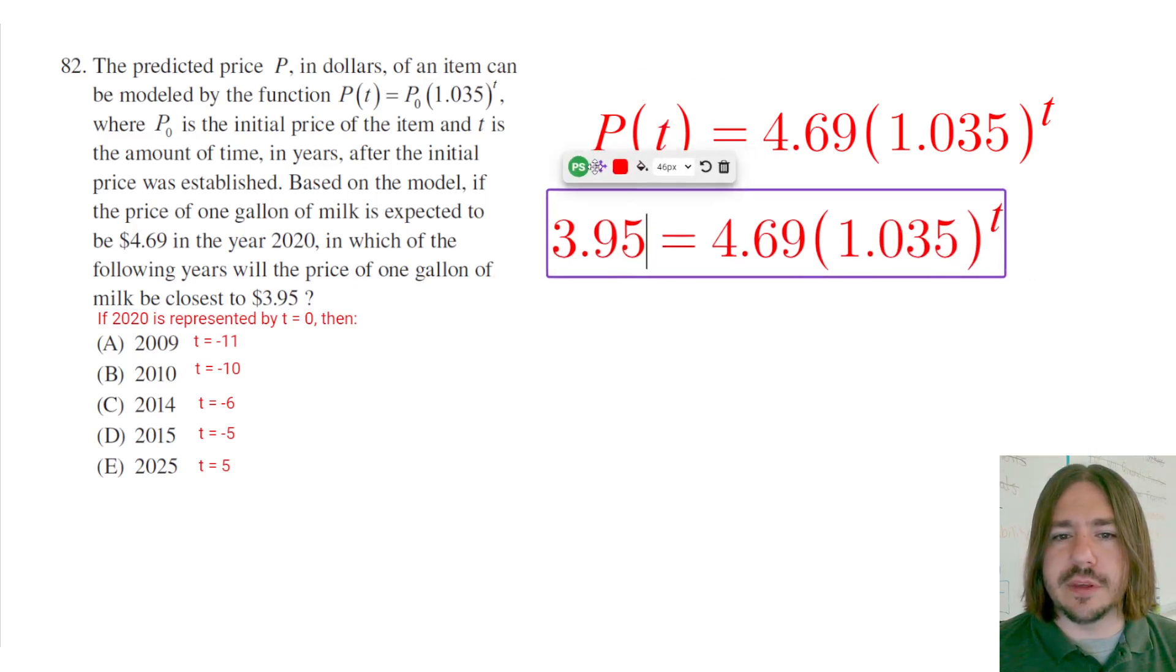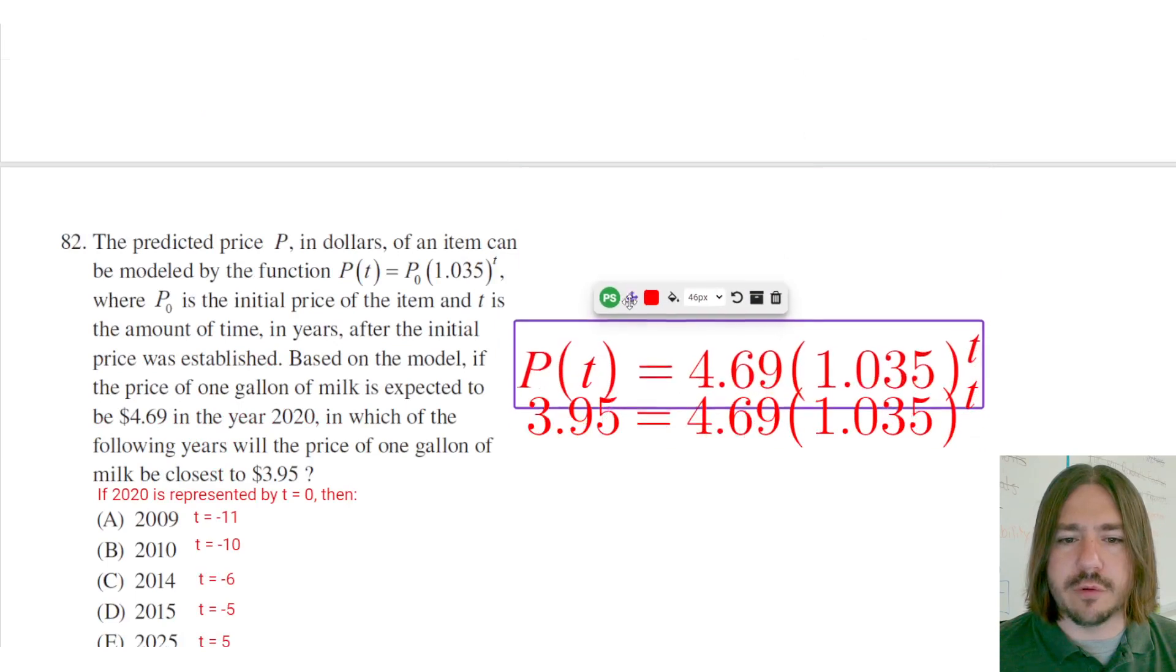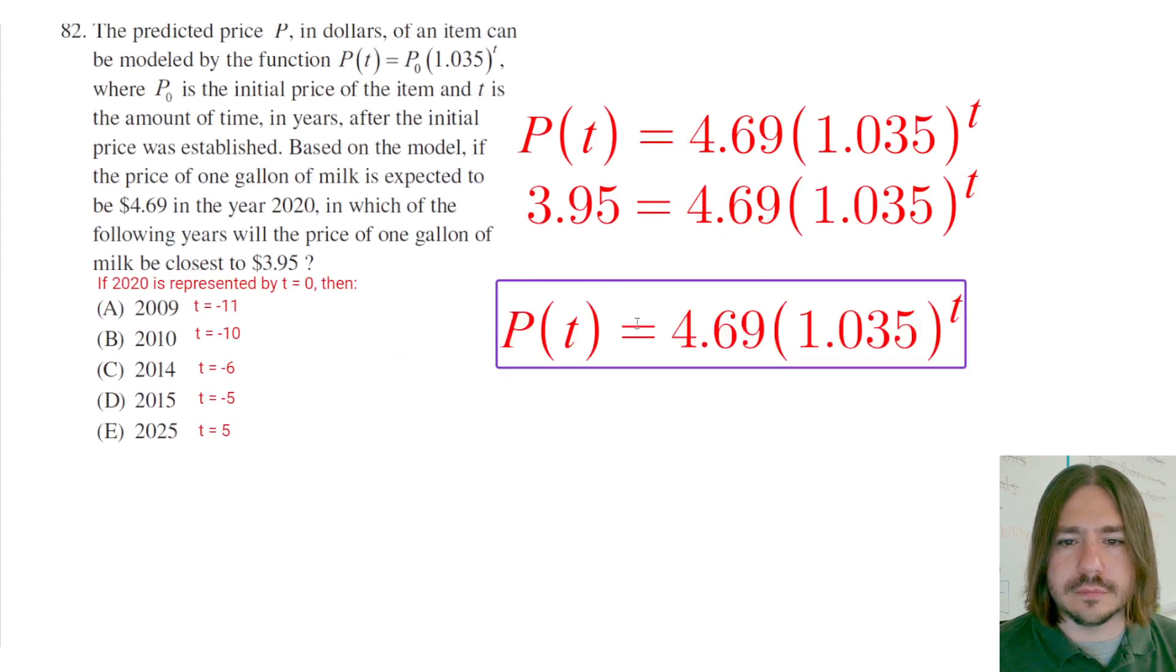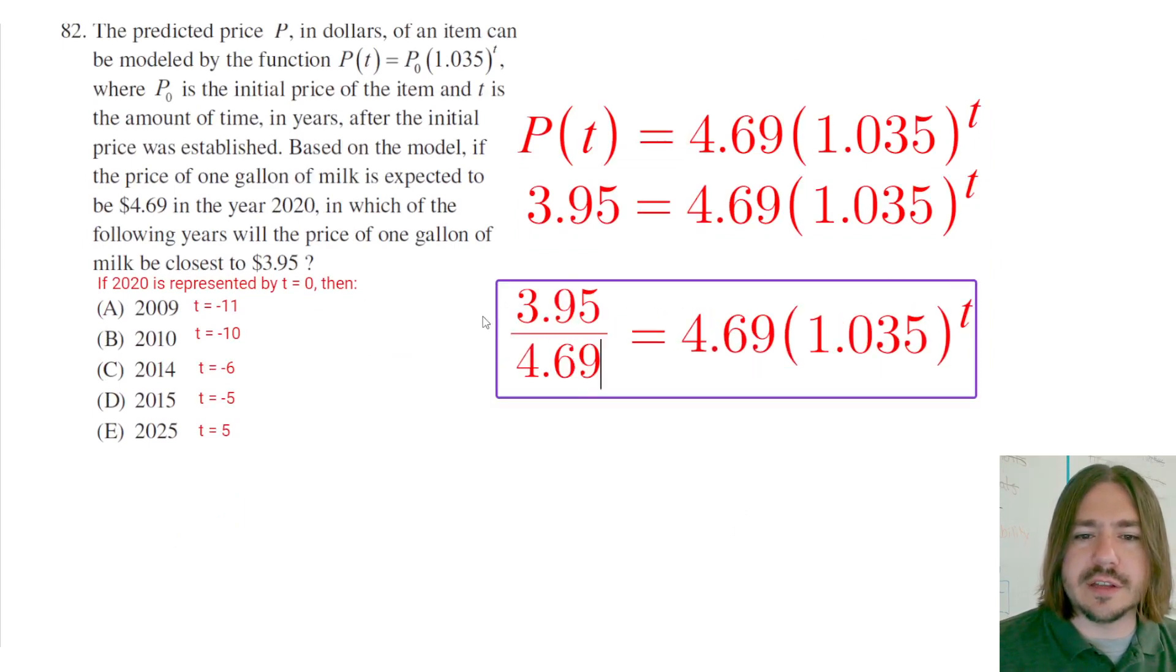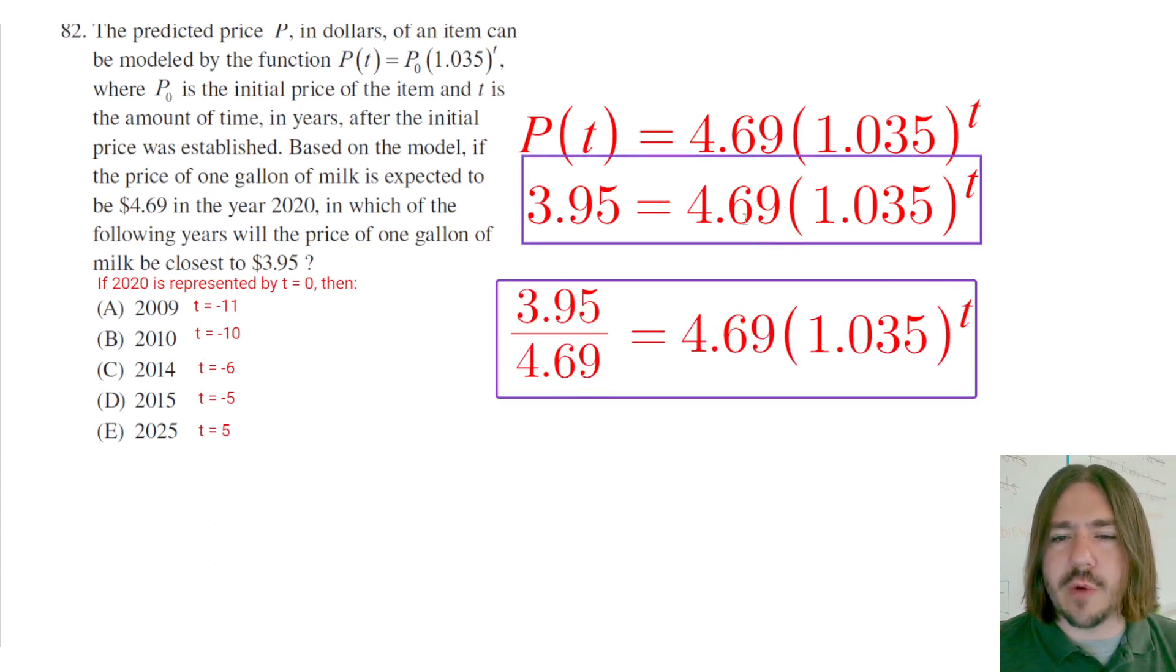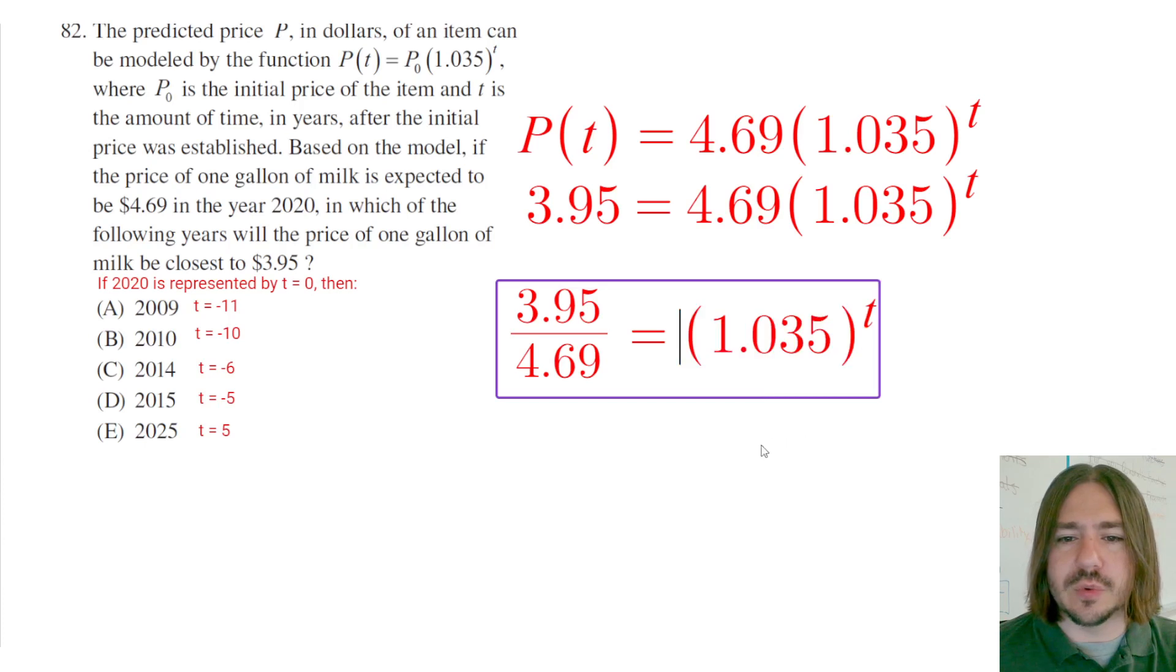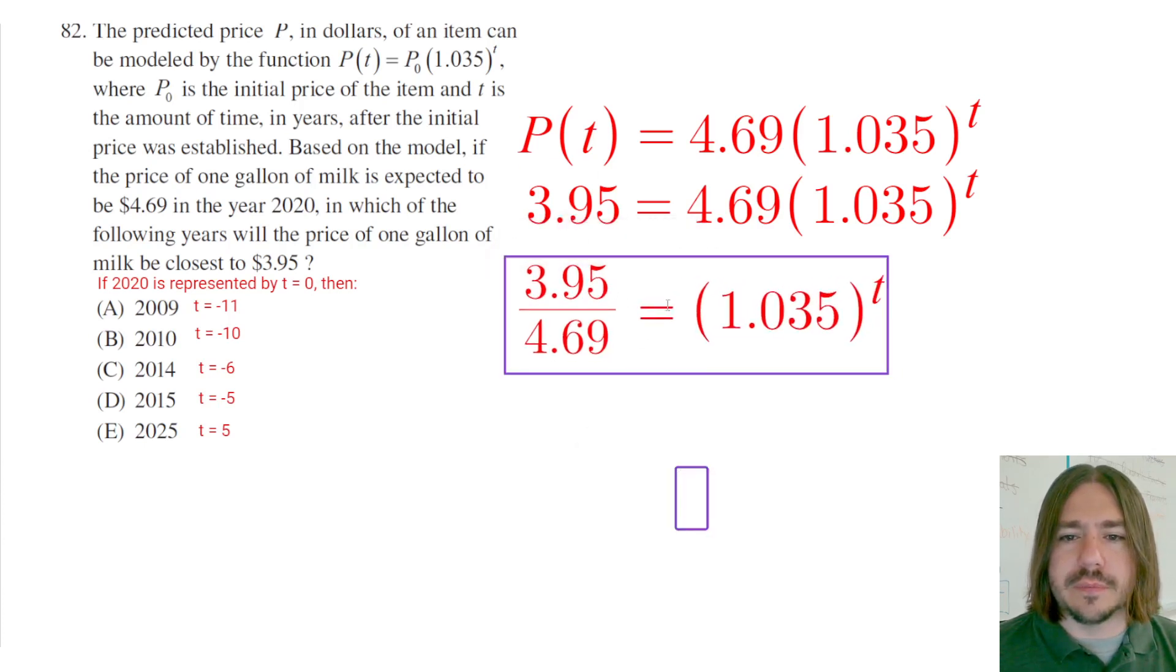So the first step is going to be to divide both sides by 4.69. So I'm going to have 3.95 divided by 4.69. And when I divide the right hand side by $4.69, that's just going to reduce to one. So that coefficient is going to go away.